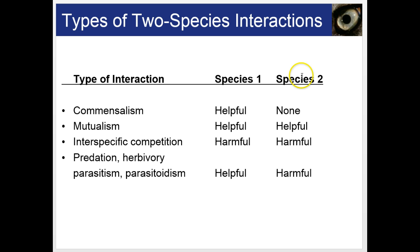Mutualism is helpful for both species. Interspecific competition is harmful for both. Predation, herbivory, parasitism, and parasitoidism are helpful to one species yet harmful to the other. We'll talk about each of those as our notes progress.